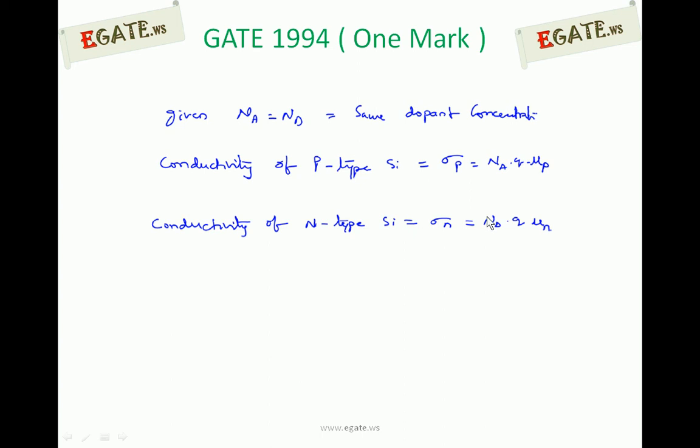Na and Nd are same and q is also having the same value. So based on the mu p and mu n values, whichever has the higher value will have higher conductivity. But we know that mobility of hole is very less compared to mobility of electron. Electron mobility is higher than hole mobility, whether it is silicon or germanium or any other semiconductor.